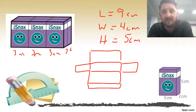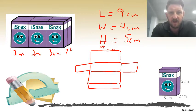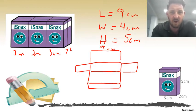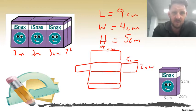We know that our length is nine centimeters, our height is five centimeters, and our width is two centimeters. By knowing our measurements, we can use them to work out the area of each rectangle in the net.